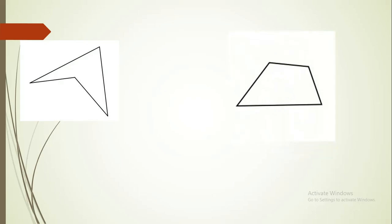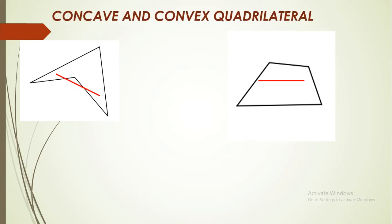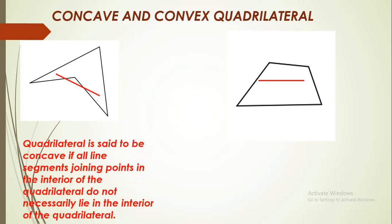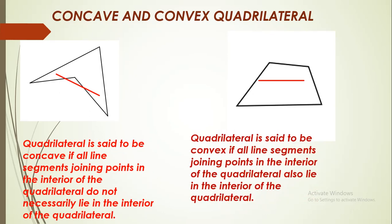Now, look at this quadrilateral children. We have two quadrilaterals here and let us take two points in the interior and join them. We observe that in the first quadrilateral, a part of the line segment lies in the exterior of the quadrilateral, whereas in the second one, it is completely in the interior. So the first figure is called concave quadrilateral and the second one is called convex quadrilateral.